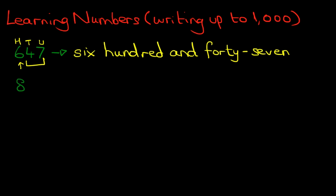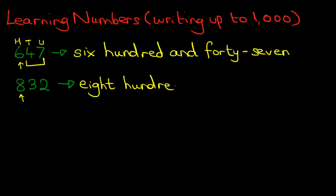We're now going to have a look at our second example. So now we've got 832. How do we write that down in words? Let's start with the 8 — I just made a little mistake there. So we've got 800 and. The next part is 32. So that gives us 832. It's nice and simple.